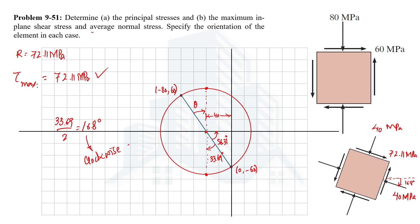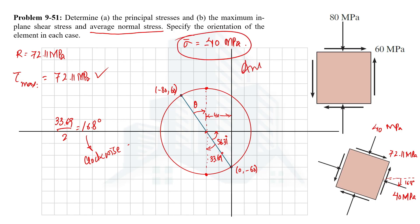We are also asked to determine the average normal stress. The average normal stress is equal to the center of the Mohr circle, which we already determined as −40 MPa — this is the average of 0 and −80 MPa, and it is negative due to the compressive normal stress. So we have now completed both parts: the principal stresses and the maximum in-plane shear stress along with their orientations. Thank you for watching, and I hope to see you in the next video.